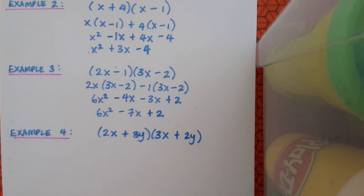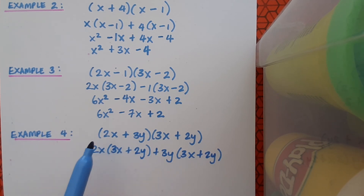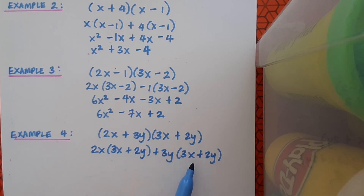Here's the last example, example 4. We've got 2x plus 3y times 3x plus 2y. Pause the video here and see if you can work this out yourself, then play and see if you're correct. I've split up the first bracket and multiplied each term in the first bracket by the full second bracket. Now I need to multiply.